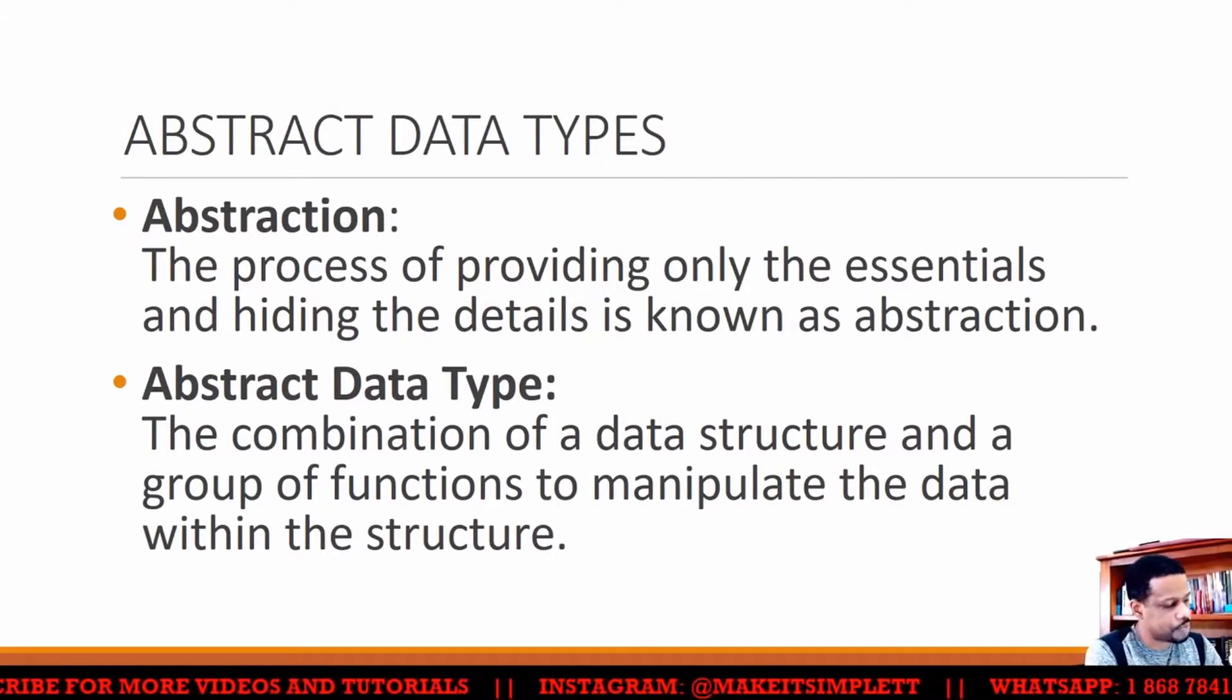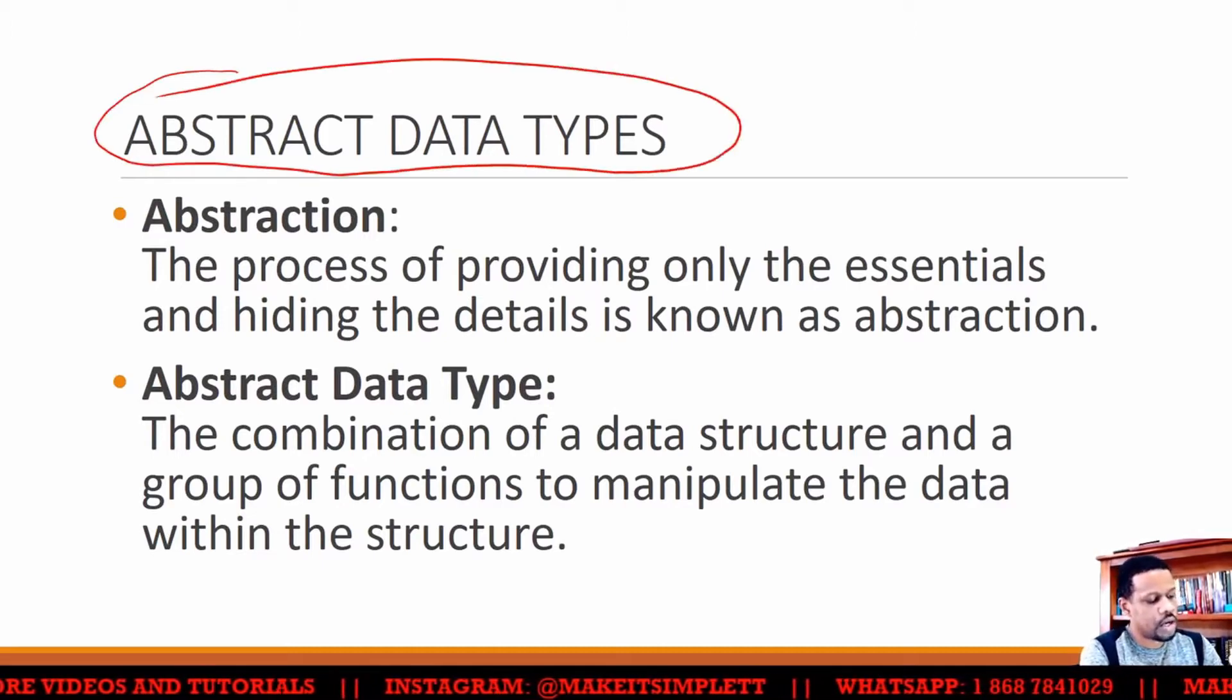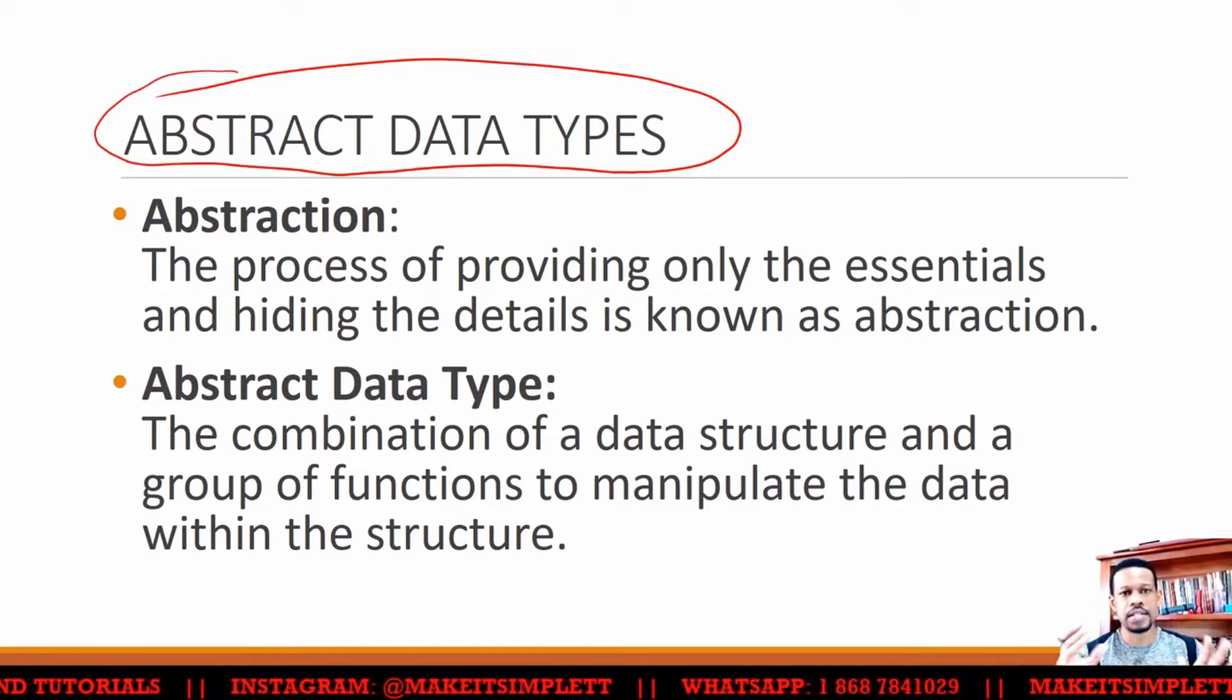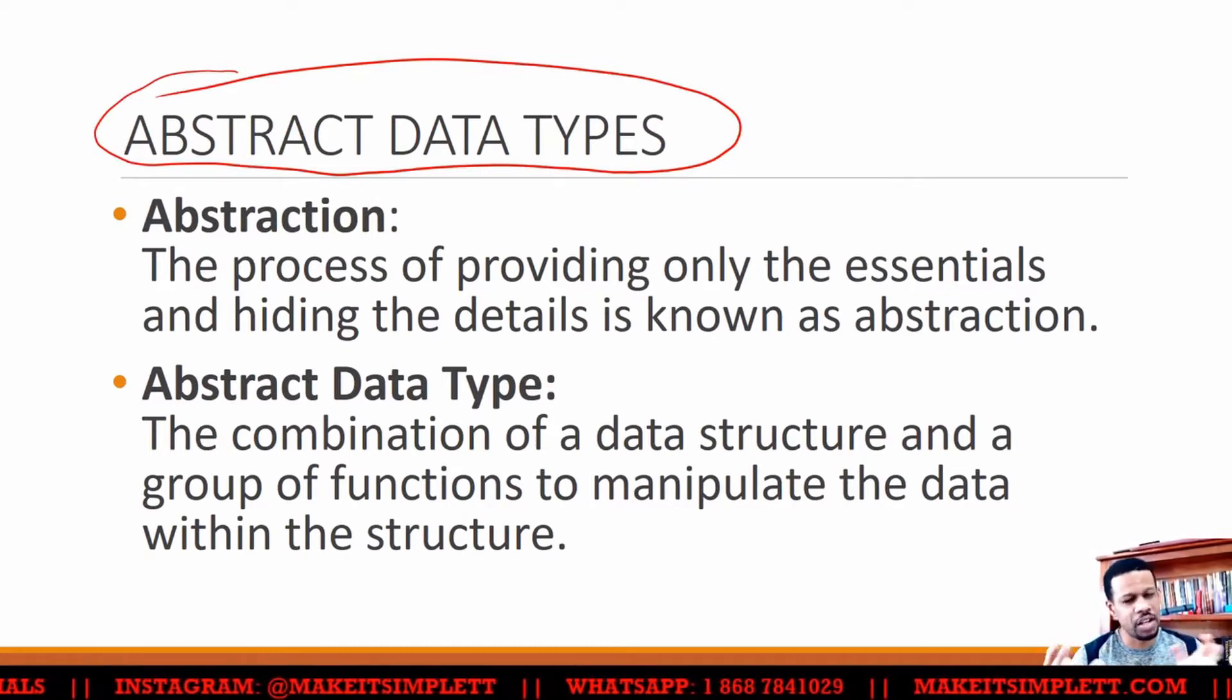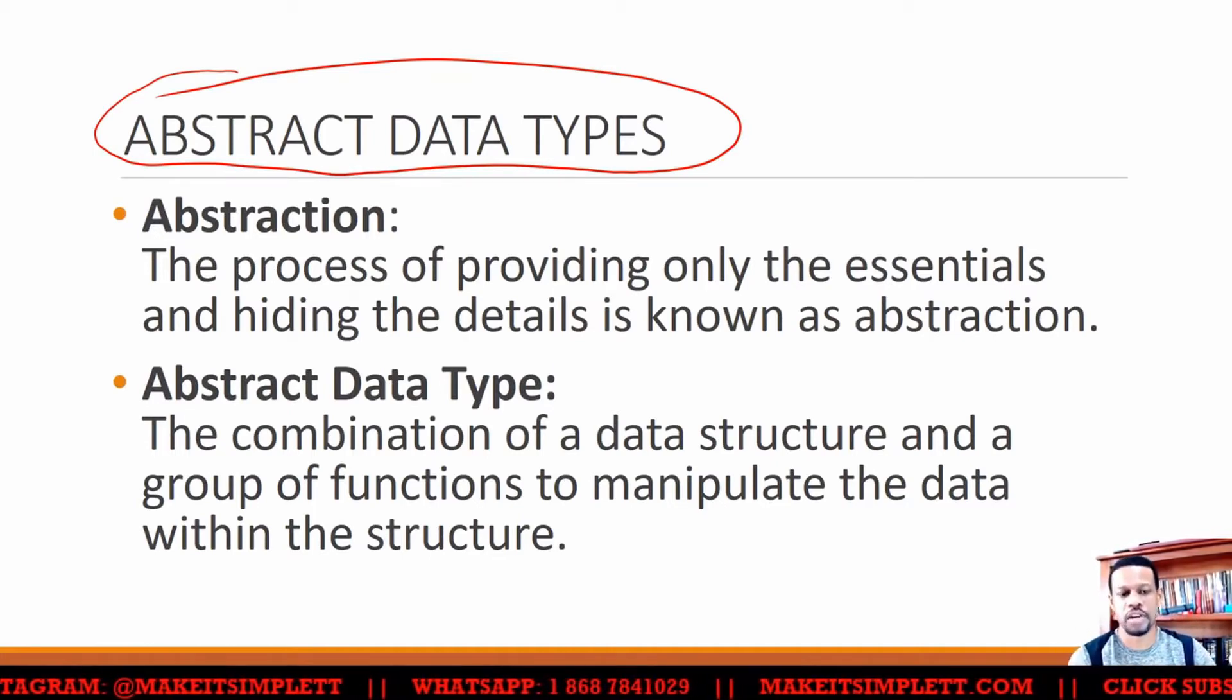When you have data structures now, you could create an abstract data type. An abstract data type is basically taking the data structure and turning it into something that it's not really, but you're looking at it from that angle. So an abstract data type is looking at something from a particular angle.